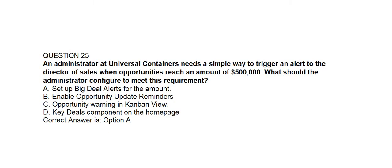Question number twenty-five. An administrator at Universal Containers needs a simple way to trigger an alert to the director of sales when opportunities reach an amount of $500,000. What should the administrator configure to meet this requirement? Option A: Set up Big Deal Alert for the amount. Option B: Enable Opportunity Update Reminders. Option C: Opportunity Warning in Kanban View. Option D: Key Deals Component on the homepage. Correct answer is Option A: Set up Big Deal Alerts for the amount.